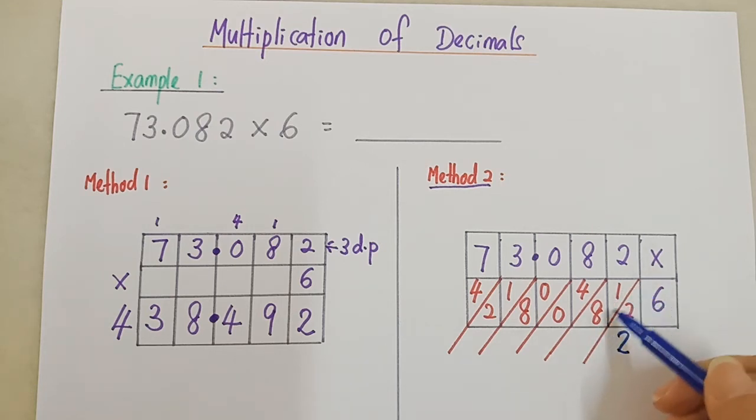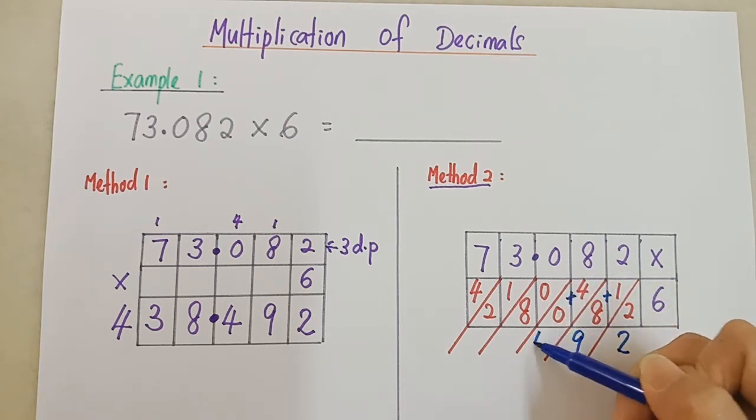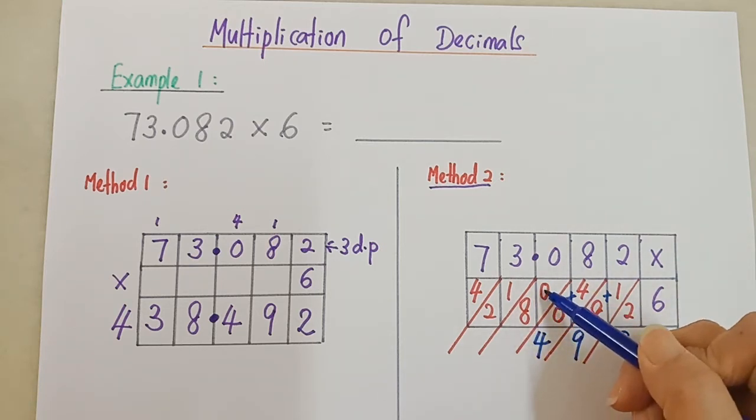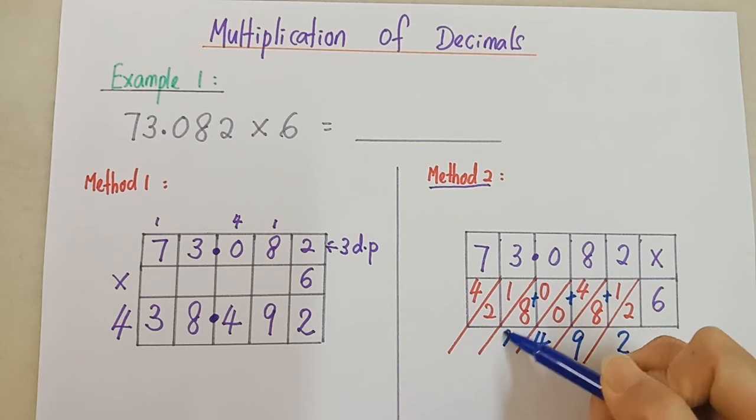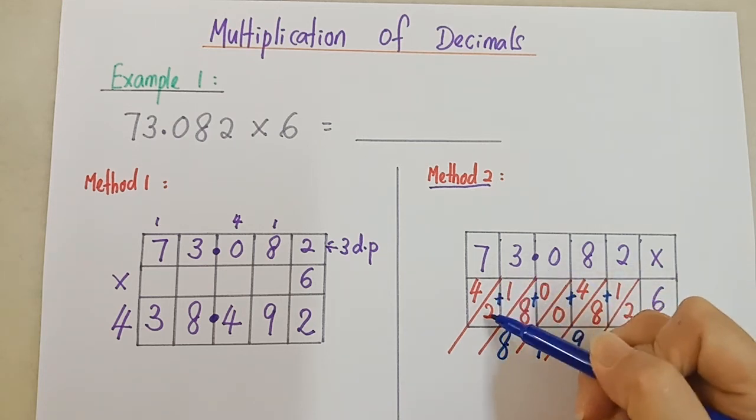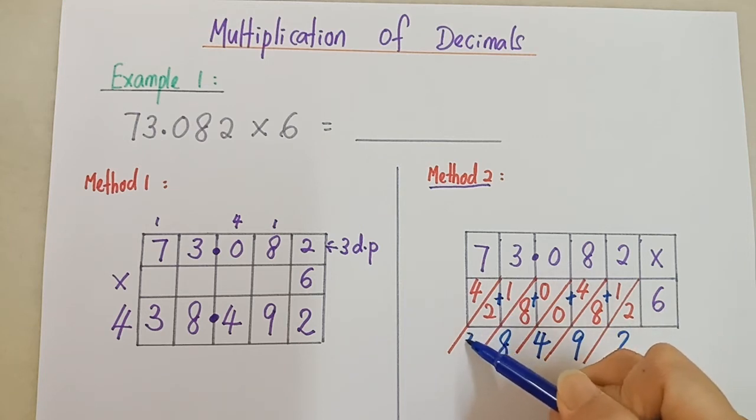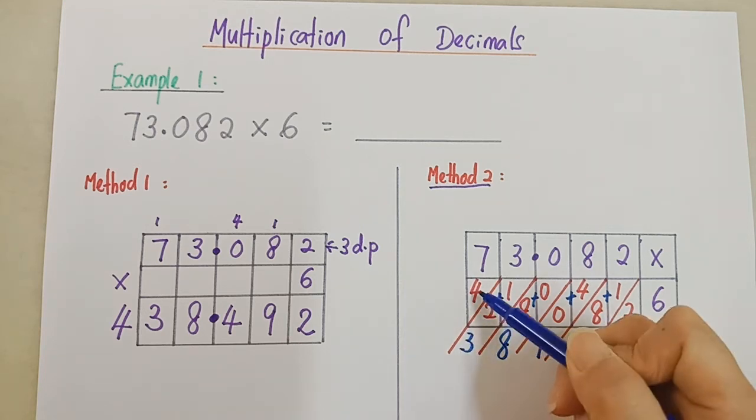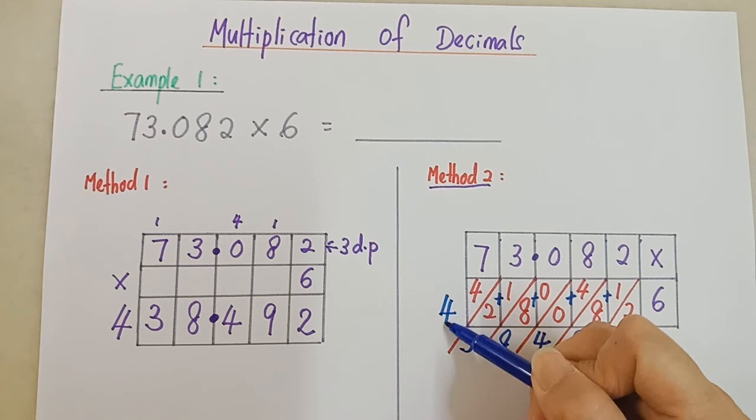Lorong kedua, 1 plus 8, you will get 9. Betul? Lorong ketiga, 4 plus 0, so it's 4. Seterusnya, 0 plus 8 is 8. Continue, 1 plus 2, you will get 3. And the last one is 4.